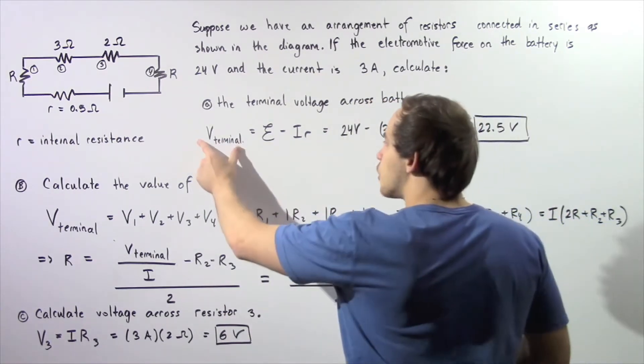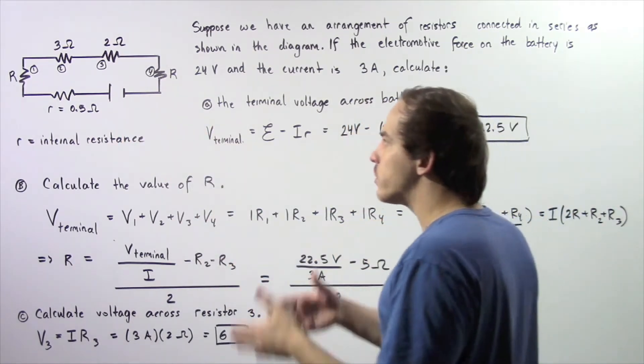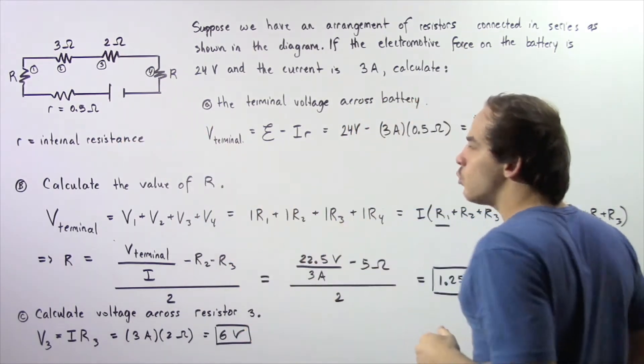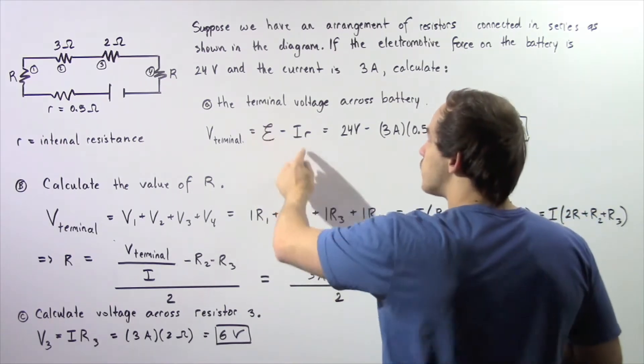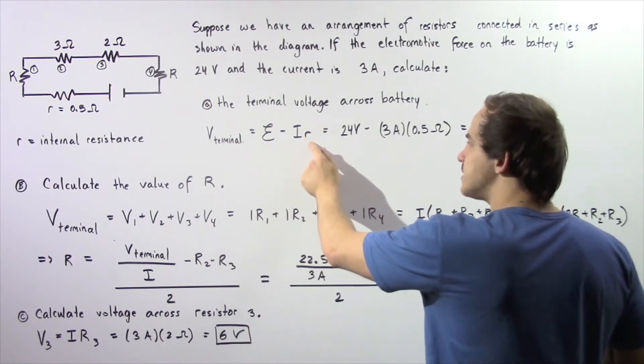So the terminal voltage across our battery when our electrons are flowing through the circuit is equal to our electromotive force minus the product of the electric current and our internal resistance.